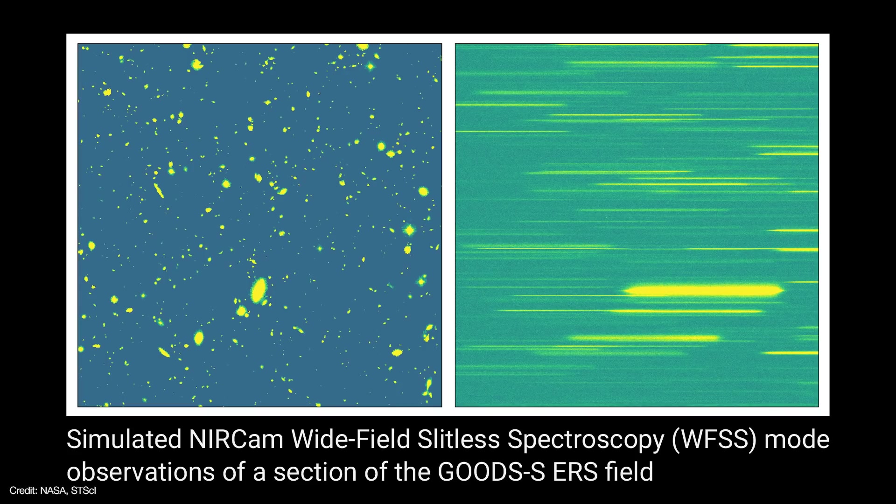For example, in the wide field spectroscopy mode, light is passed through a prism to create a spectrum of every source in the field.